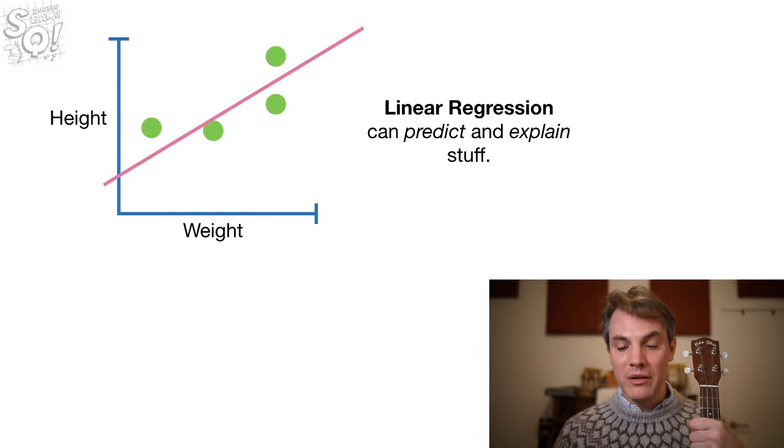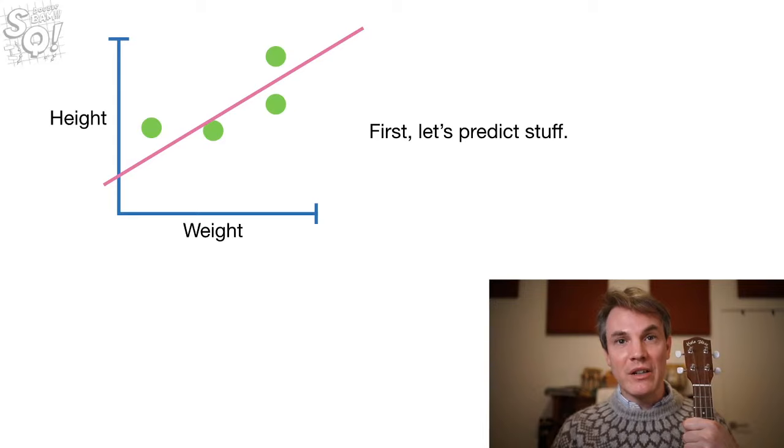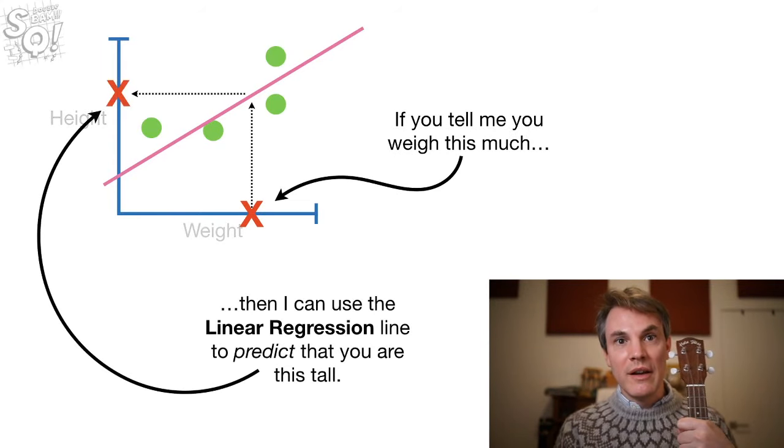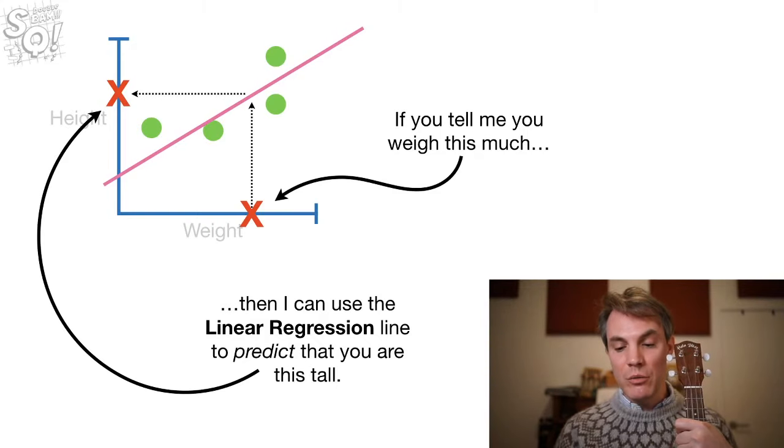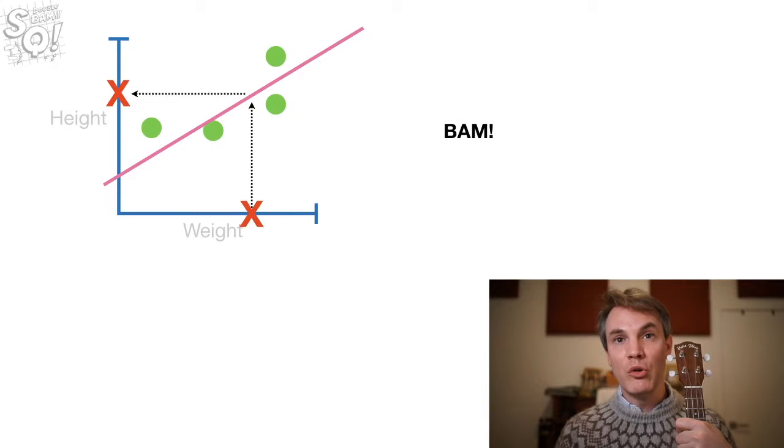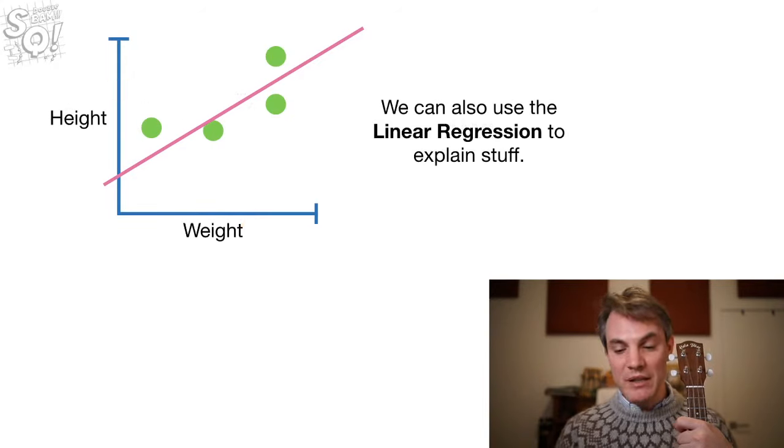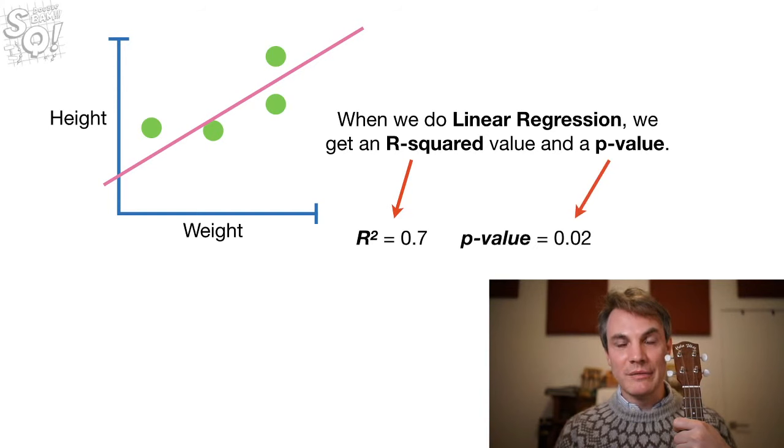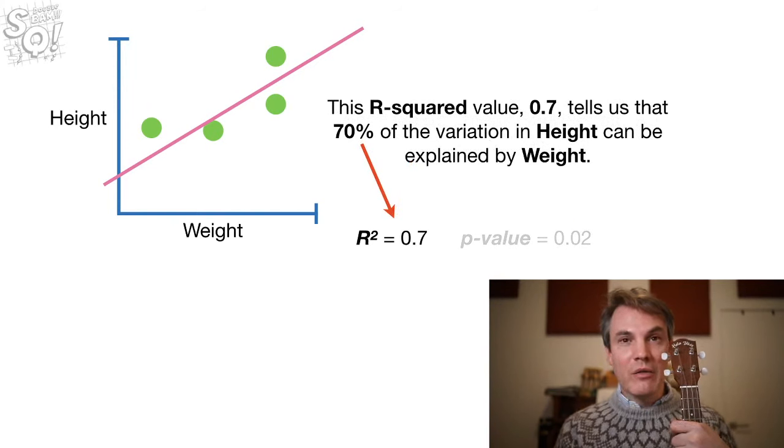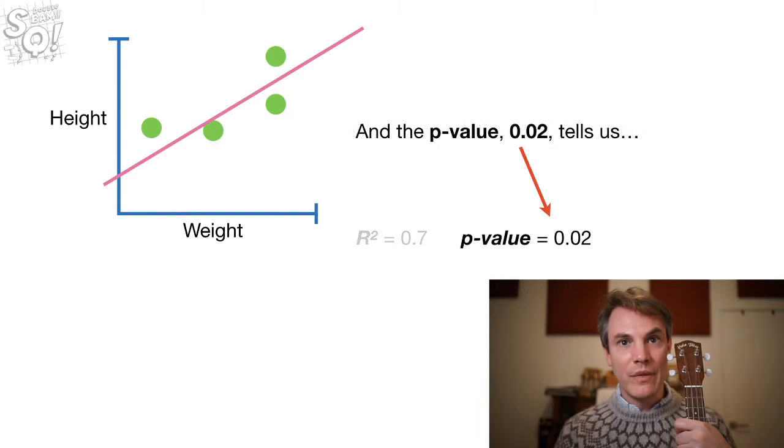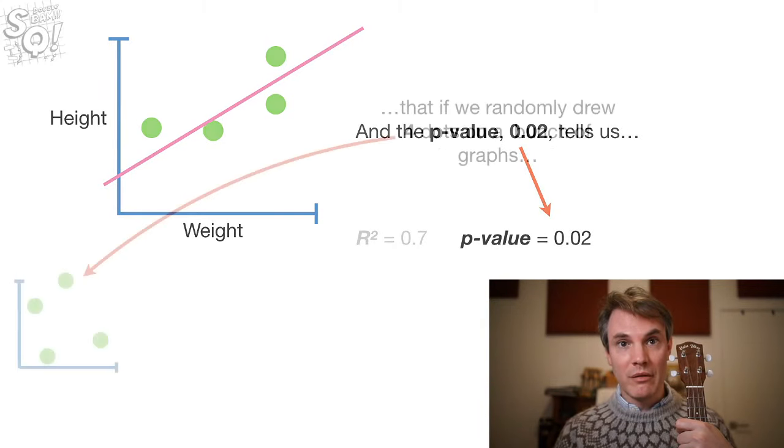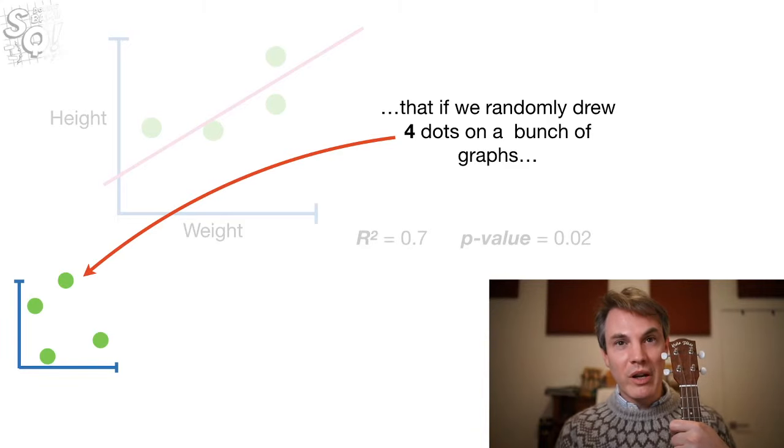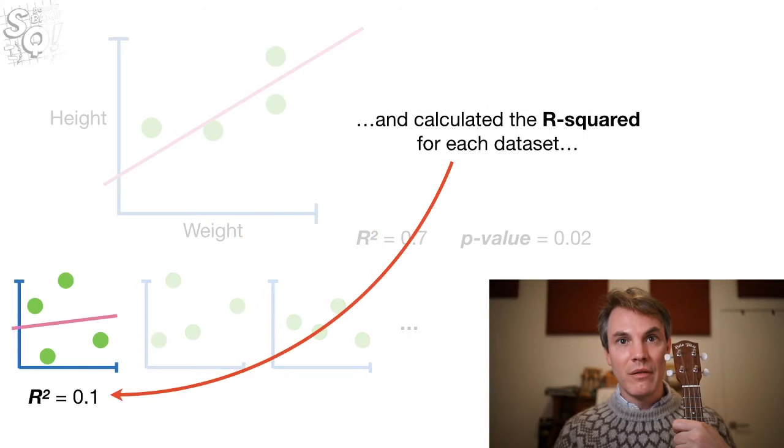So we've got weight and height, and first we're going to predict stuff. So if you tell me you weigh this much, then I can use the linear regression line to predict that you are this tall. Bam. No big deal. We can also use linear regression to explain stuff. When we do a linear regression, we get an R-squared value, and we get a p-value. This R-squared value, 0.7, tells us that 70% of the variation in height can be explained by weight.